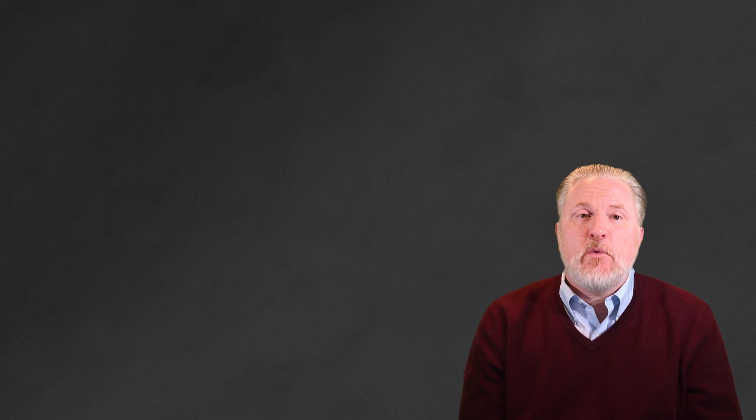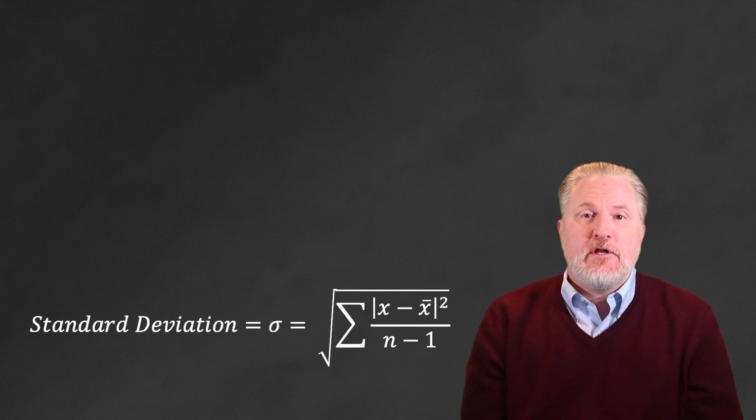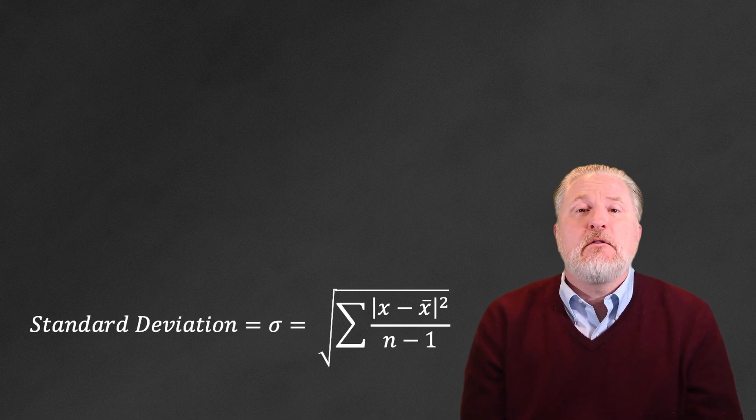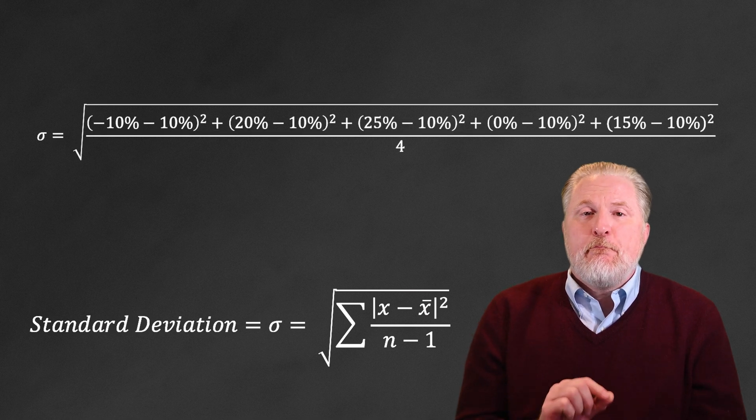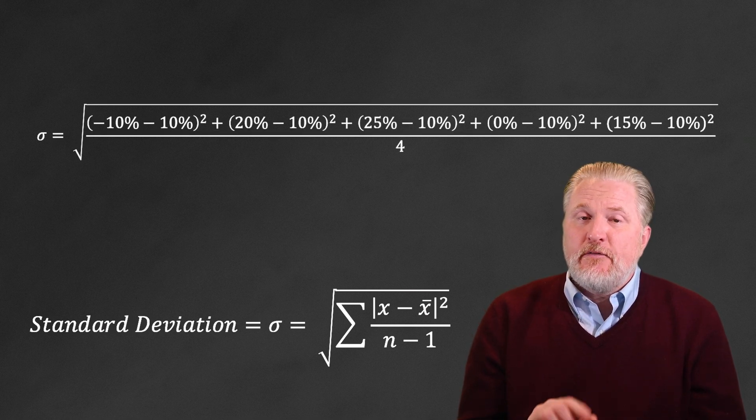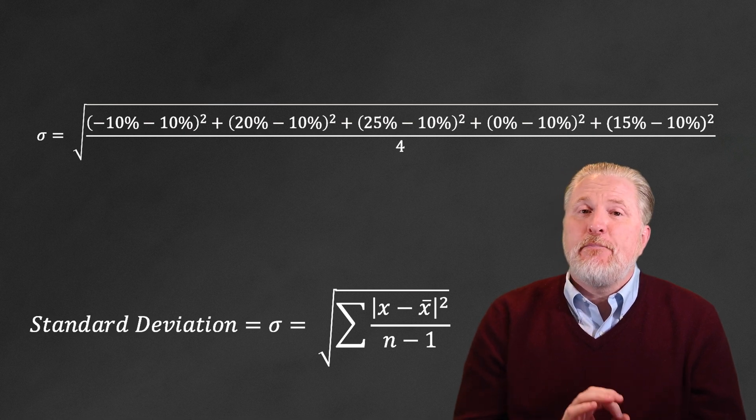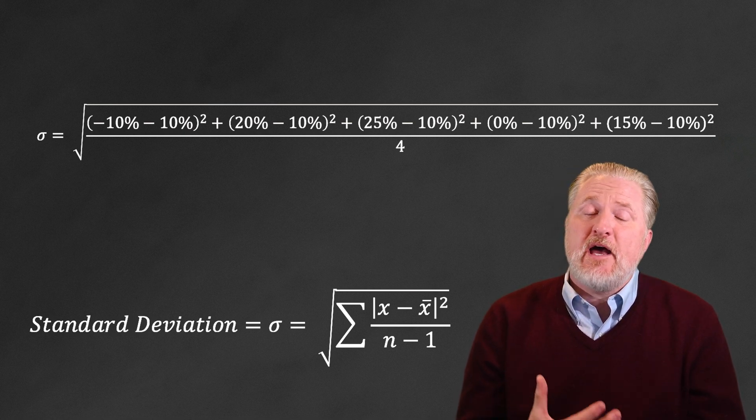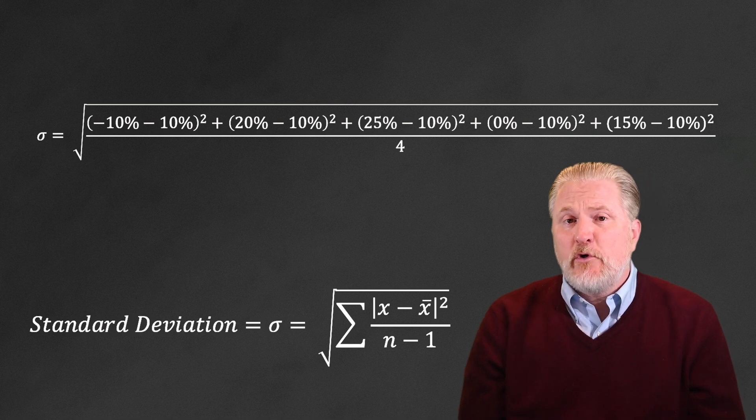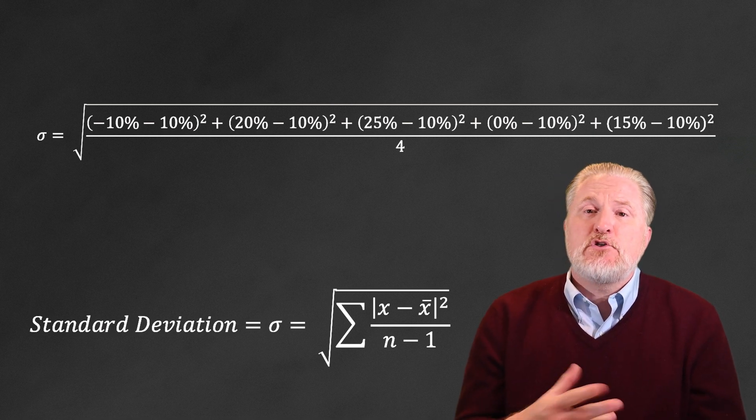So to calculate the standard deviation, we simply sum the squared differences between each observation and the mean and then divide by n, like this: negative 10% minus 10% (in this case the first 10% is the return in year one, and the 10% that we're subtracting from it is the x bar, or the mean return over the five years) squared.